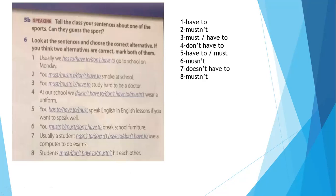Now the last important question, question number six. Look at the sentences and choose the correct alternative — if two alternatives are correct, mark both. Number one: usually we have to go to school on Monday. Number two: you must not smoke at school — because it's a rule. Number three: you must or you have to study hard to be a doctor — both are correct.